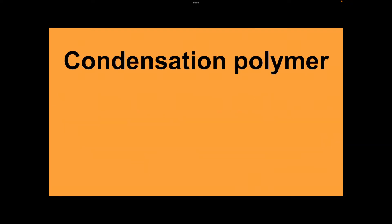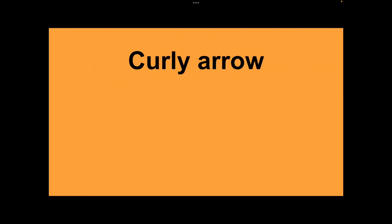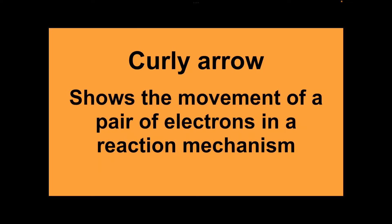Condensation polymer: a long molecule formed when a large number of monomers join together and eliminate a small molecule such as H₂O or HCl. Curly arrow: shows the movement of a pair of electrons in a reaction mechanism.